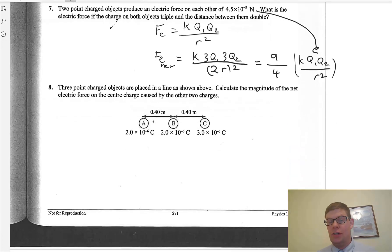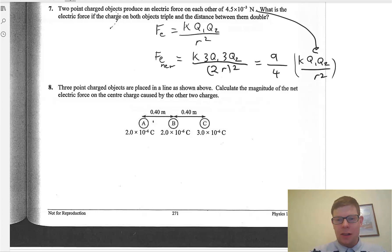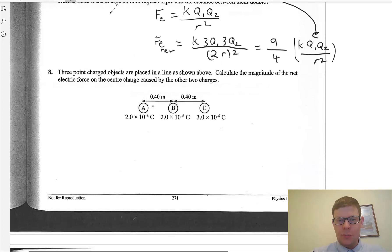Now, you can do other tricks, because, again, force is a vector. So, here we have three point-charged objects placed in the line as shown above. Calculate the magnitude of the net electric force on the center charge caused by the other two charges. Since they're, like, the same distance away, the way I like to do this is I imagine this 3 times 10 to the minus 6 charge is composed of a 2 times 10 to the minus 6 charge and a 1 times 10 to the minus 6 charge. It's 3, so I can say it's built made of a 2 plus 1 charge.